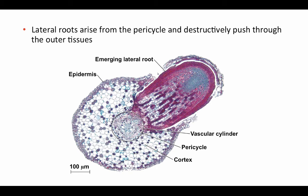Lateral roots develop from within the main root itself, arising from the pericycle — the population of cells surrounding the vascular cylinder. Cells of the pericycle begin to divide and form a lateral root structure that pushes destructively through the surrounding tissue, bursting through the epidermis. The lateral root develops its own layer of epidermis as it grows.